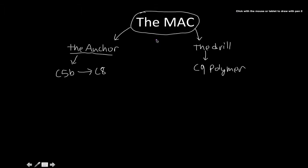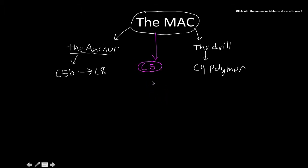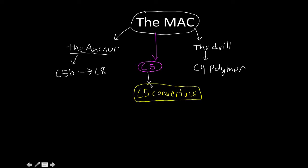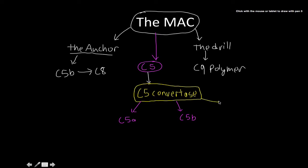The membrane attack complex is all about C5. Unlike C3, C5 doesn't have a thioester bond. When C5 is exposed to a C5 convertase, it breaks down C5 into alpha and beta subunits. C5 beta acts as the anchor and binds to the pathogen. C5 alpha acts as an inflammatory agent — an anaphylatoxin.